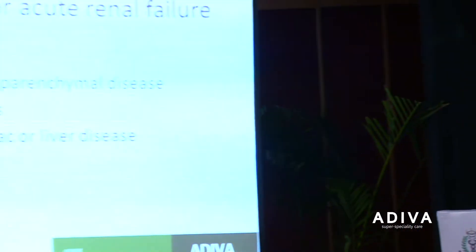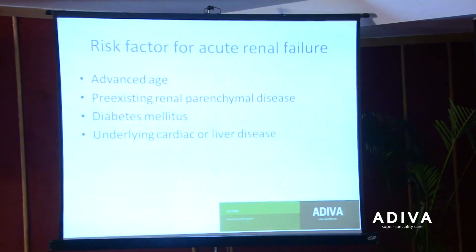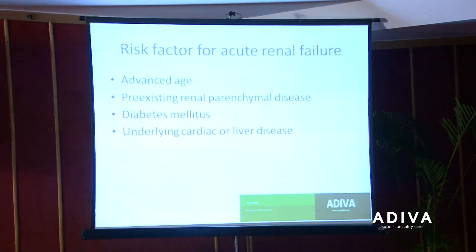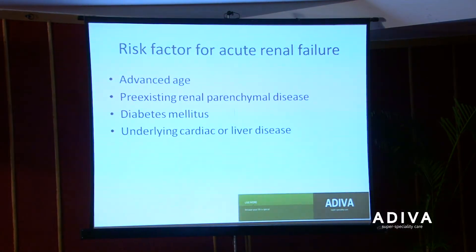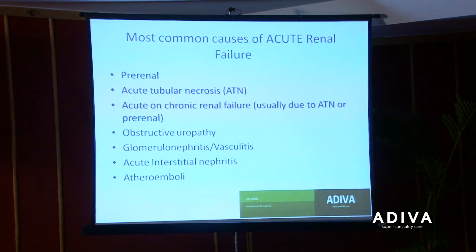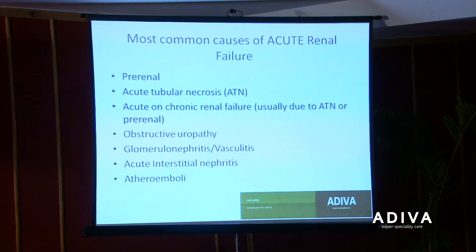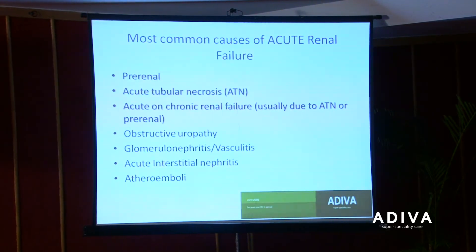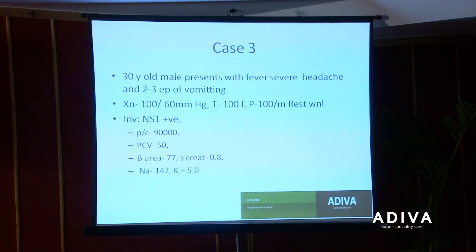Coming back to acute kidney injury: it could be pre-renal or tubular necrosis. Risk factors for AKI include all elderly patients, all diabetics, or patients with previous kidney disease. The most common causes are pre-renal or ATN. Now a dengue case — what you've all been dealing with recently.